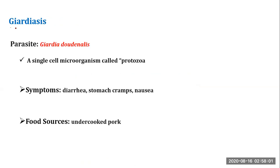The last disease is giardiasis, caused by another kind of parasite called Giardia duodenalis. It is a single-cell microorganism, a type of protozoa. Food sources include undercooked pork. Symptoms include diarrhea, stomach cramps, and nausea. So we have read about lots of diseases related to bacteria, virus, fungus, and parasites, covering both foodborne and non-foodborne diseases. We'll discuss more in our next class. Thank you.